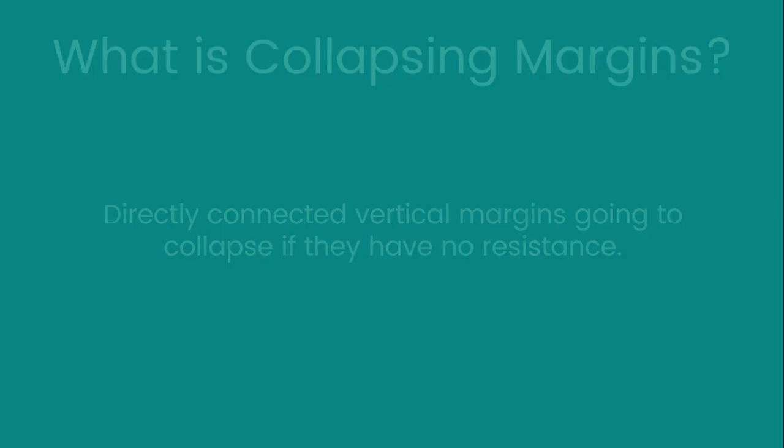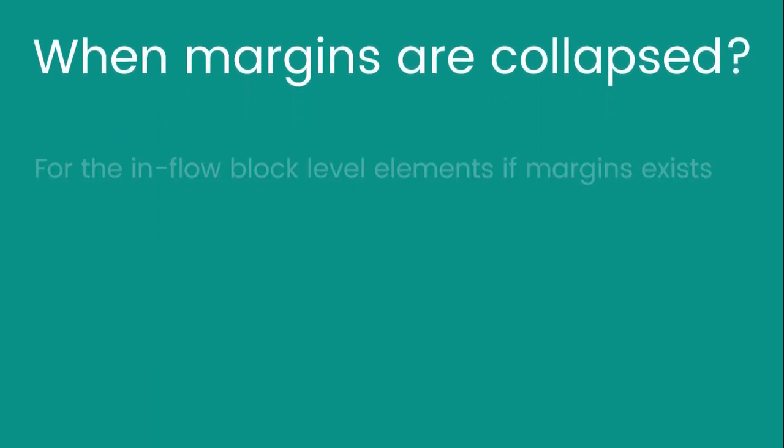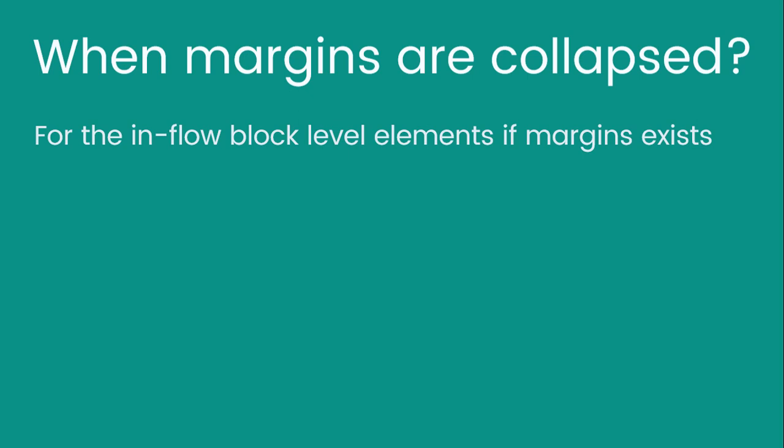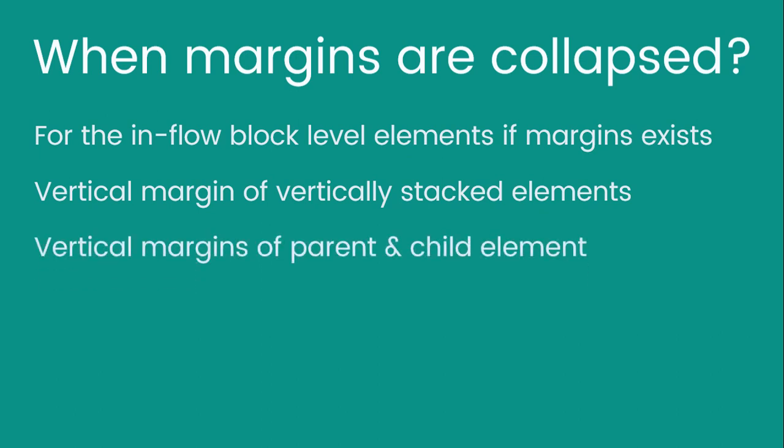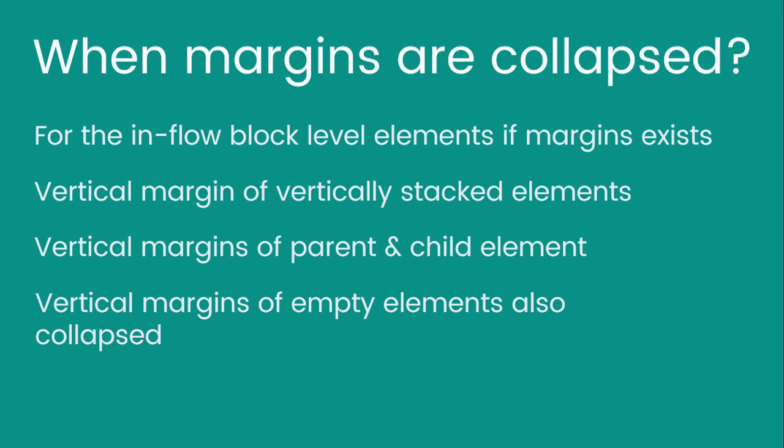Now let's see when margins are collapsed. For every element in normal document flow that is a block-level element, the margins are always going to be collapsed. For elements which are vertically stacked and have margins applied, those margins are always going to collapse. If they are block-level elements, the vertical margins of parent and child elements are also going to collapse. This is applicable only for the first child and last child of the parent element. For the last child, it only collapses if the height of the parent is set to auto instead of a specific height.